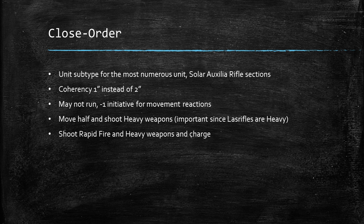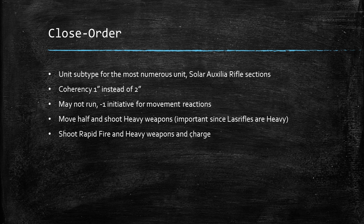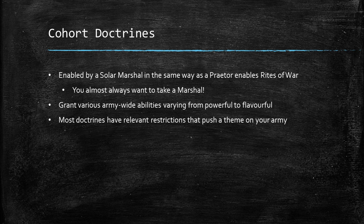These units get the ability to move half their normal movement and still shoot heavy weapons, which is good. It's a steadily advancing line of troops shoulder to shoulder cutting down the enemies. This matters because laz rifles — their default weapon — are a heavy weapon and a really good gun, much better than a lasgun in 40K, so you need this rule to move and shoot effectively. Close Order also lets you shoot rapid fire and heavy weapons and then charge, which is useful for locking down objectives or finishing off small enemy units.